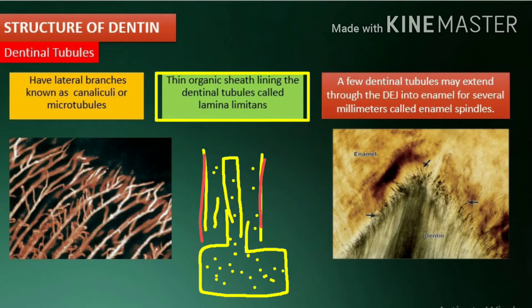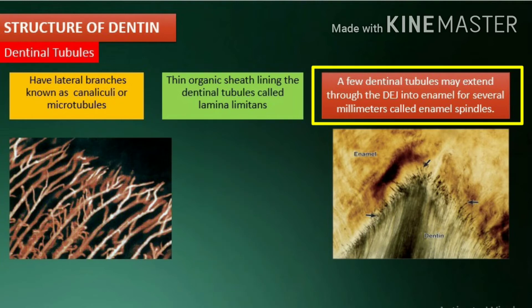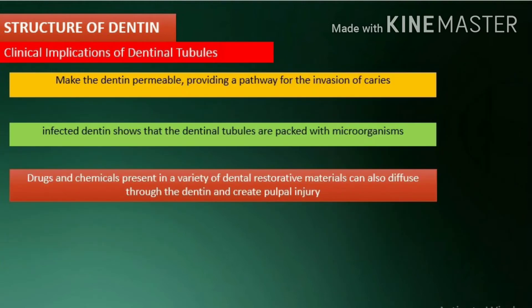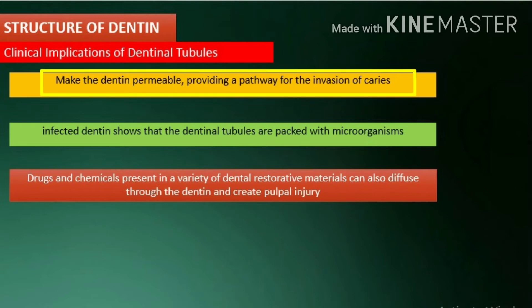The dentinal tubules contain the odontoblastic processes and a thin organic sheath lining the dentinal tubules, called the lamina limitans. A few dentinal tubules may extend through the dentino-enamel junction into enamel for several millimeters; these are called enamel spindles.